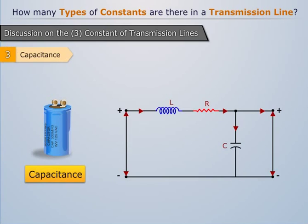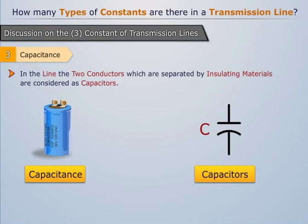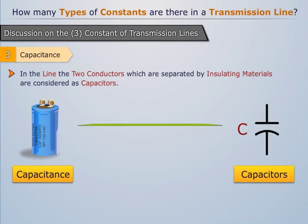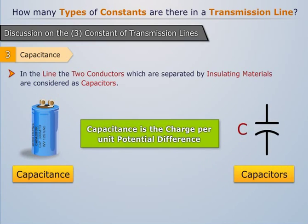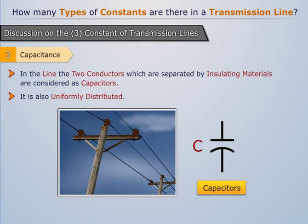Finally we discuss about capacitance. And as we already know that here in the transmission line the two conductors which are separated by insulating materials are considered as capacitors. And the accurate definition of capacitance is the charge per unit potential difference. Again it is uniformly distributed.